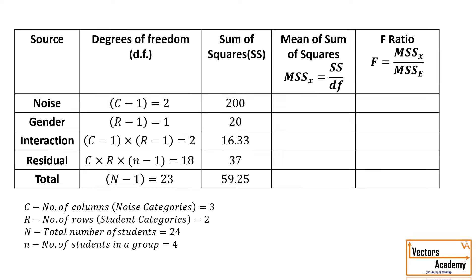Now we will make a table of all the data found so far. Have a careful look at how the degrees of freedom are found. For noise, we had three columns, so number of columns minus one gives the degrees of freedom for noise. For gender, we had two categories — male and female — minus one gives you one. The interaction between noise and gender is found by number of columns minus one multiplied by number of rows minus one, which comes out to two. To find the mean sum of squares, we divide the sum of squares by the degrees of freedom to get the respective mean sum of squares values.